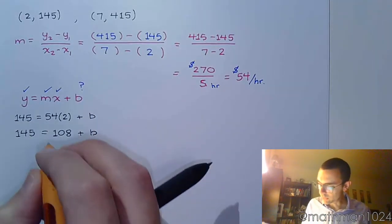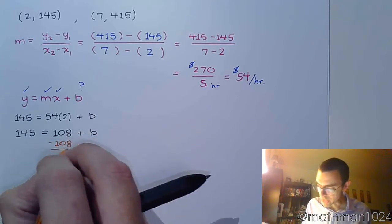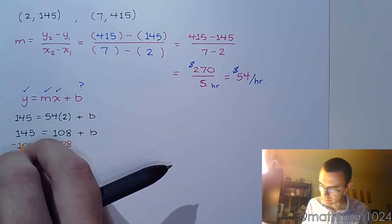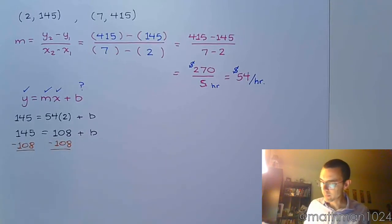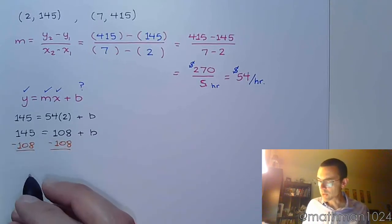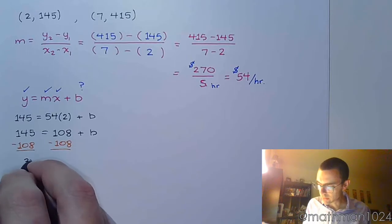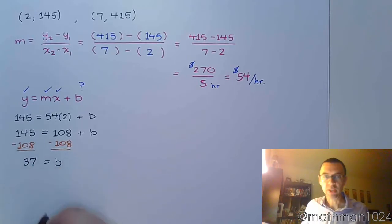We solve for b by subtracting 108. 145 minus 108 is 37.